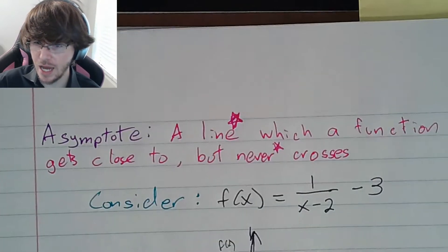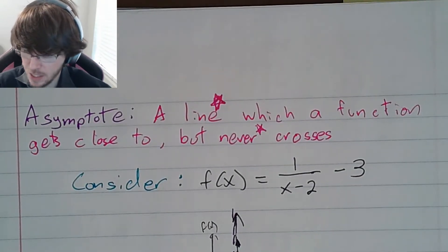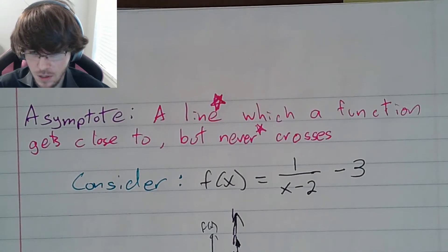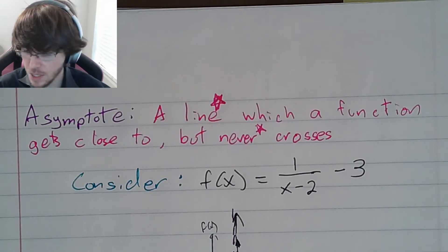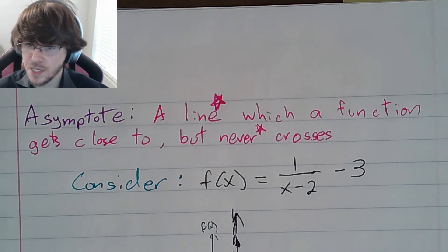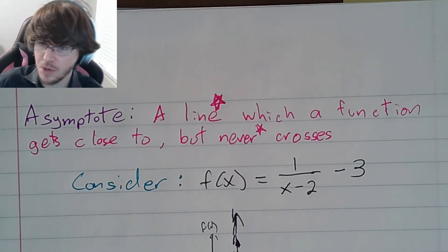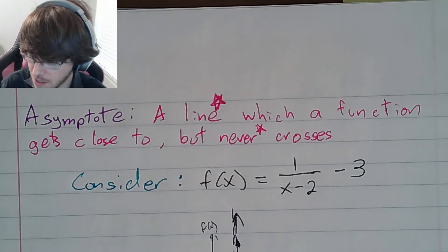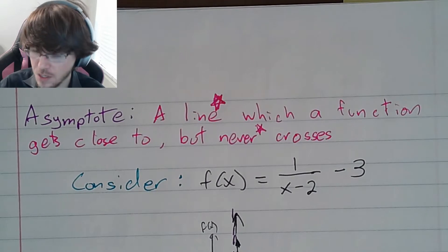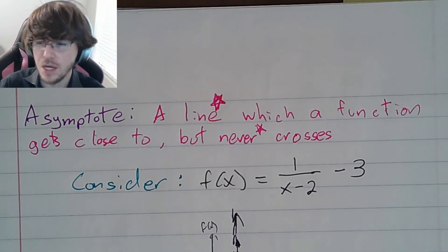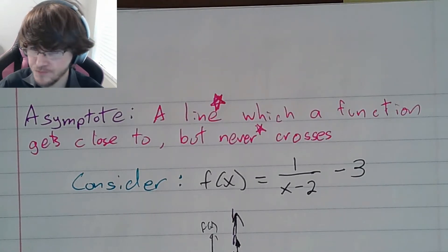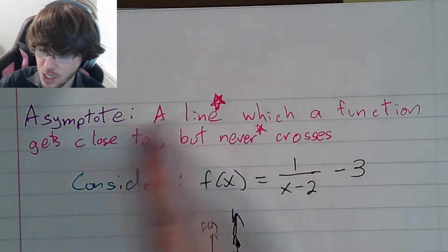What is an asymptote? A line — and I put a star there because technically asymptotes do not need to be lines; they can also be curves or parabolas or other graphs. For us it's just going to be a line — which a function gets close to but never crosses. I put a star on the word 'never' because that is also misleading; it can actually cross it, just not for the functions we're doing.